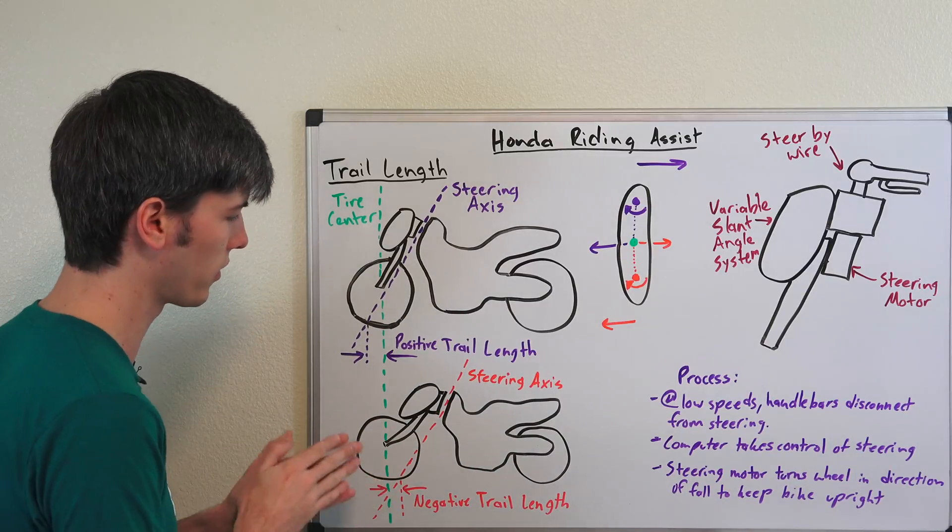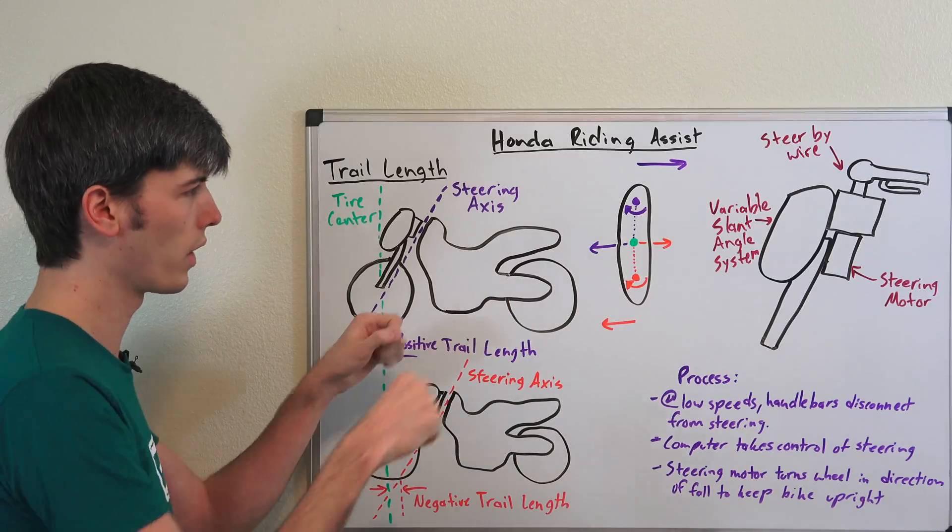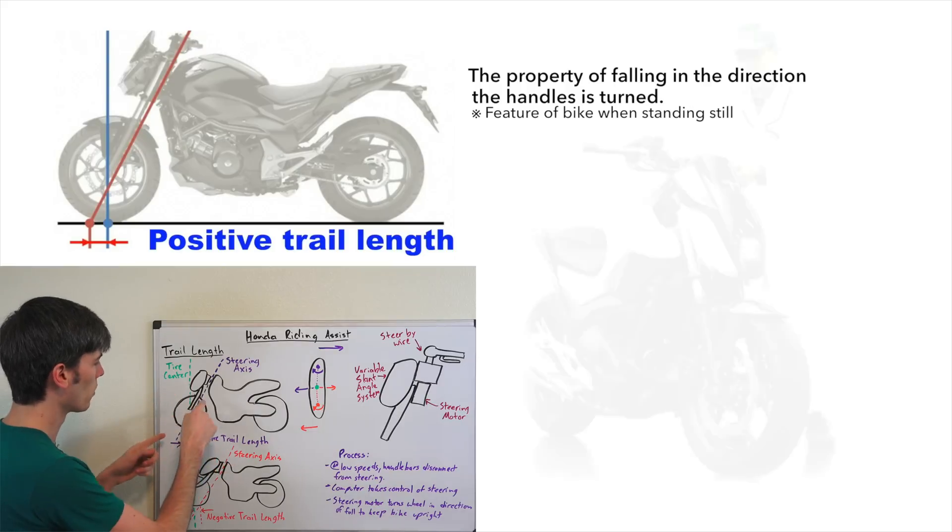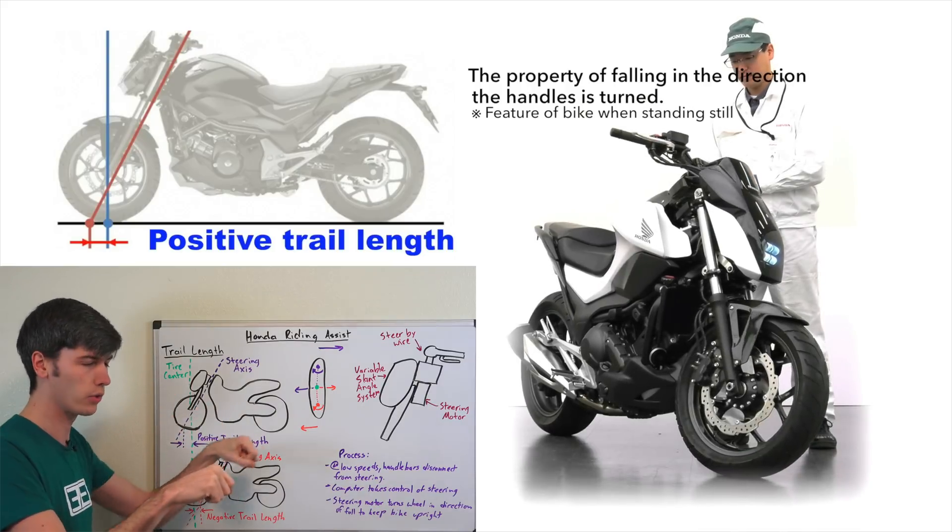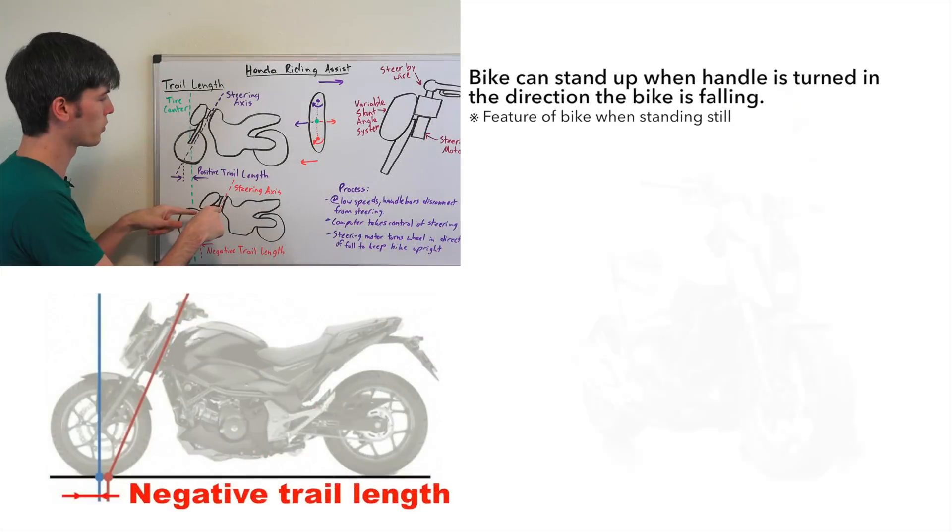What these do is change how the bike moves when you pivot that steering axis. If you turn to the right with positive trail length, the bike is going to want to turn into that and fall into that corner.